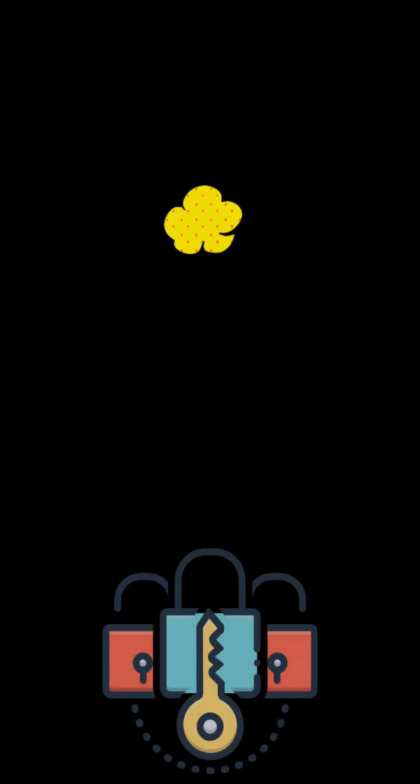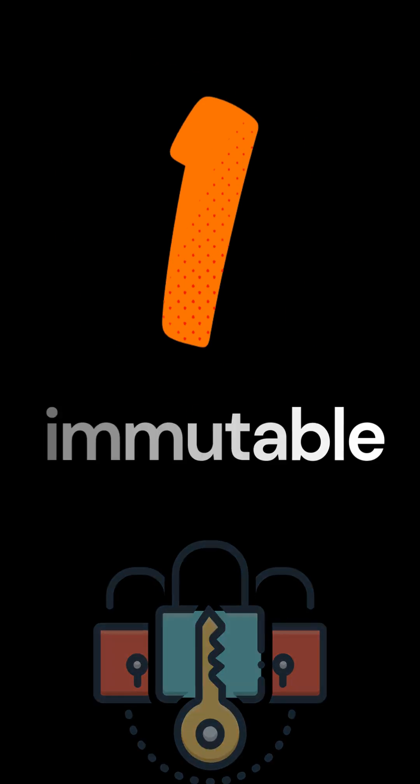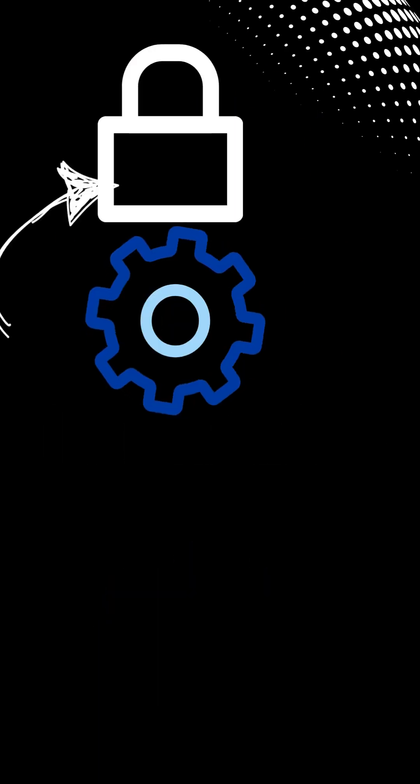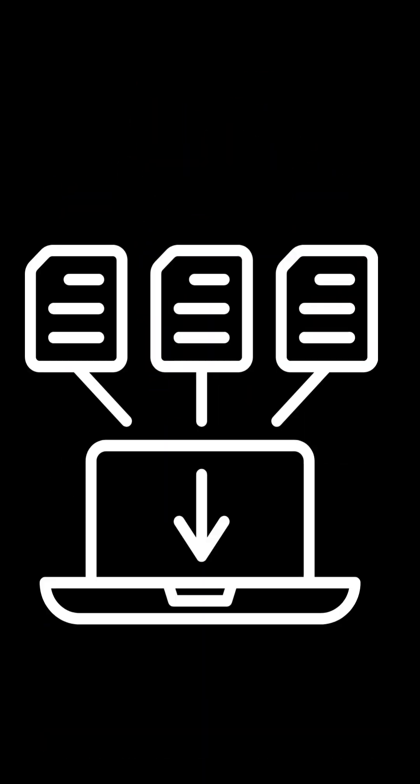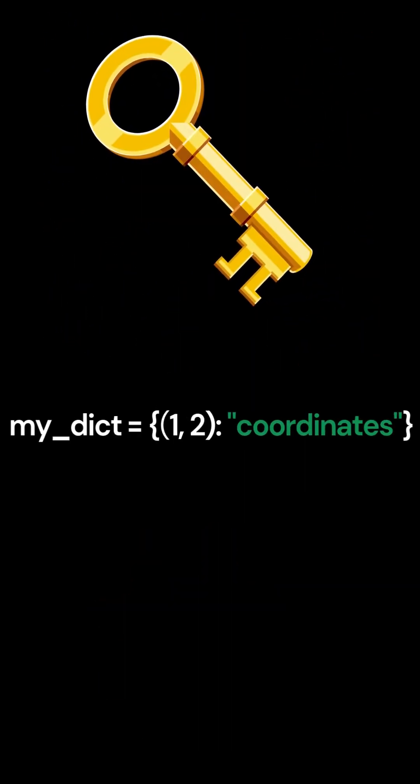Key characteristics: 1. Immutable — elements cannot be added, removed, or changed after creation. 2. Ordered — elements maintain their order, like lists. 3. Heterogeneous — can store elements of different data types. 4. Hashable — tuples can be used as keys in dictionaries.